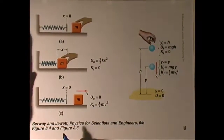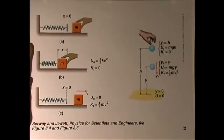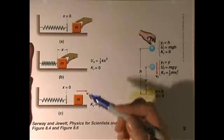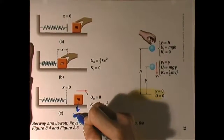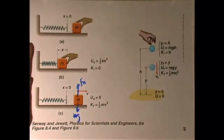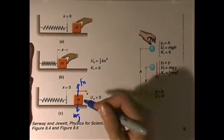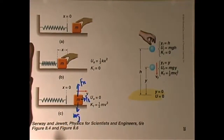Let me show you a couple of examples. The first one is the mass-spring system. Let's say we compress the spring by a distance x, then we let go of the block. When the spring pushes the block, the forces on the block are mg, normal force, and elastic force — that's why the block starts to move to the right.